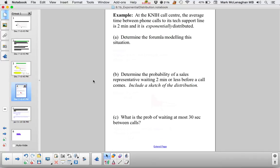Okay, so an example. At the K9 call center, the average wait time between phone calls for tech support line is 2 minutes and it's exponentially distributed. Determine the formula modeling the situation.